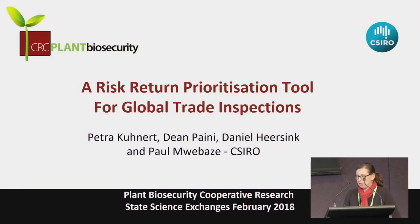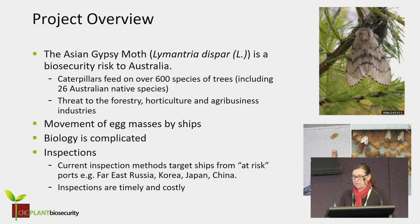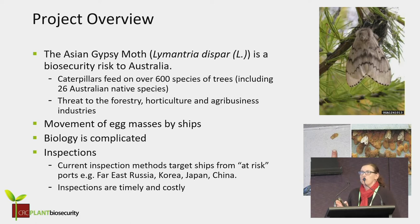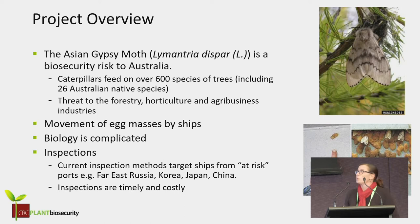I'm going to be talking about the Asian Gypsy Moth today and a tool we've developed to help reduce the number of inspections for this pest potentially coming into Australia. For those not familiar with the Asian Gypsy Moth, it is a biosecurity risk to Australia. It can feed on over 600 different species of trees, including 26 Australian native species, making it a big threat to the forestry and horticultural industries.